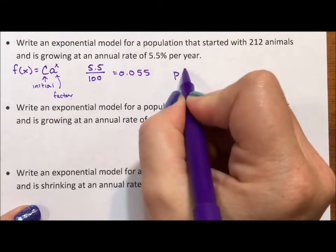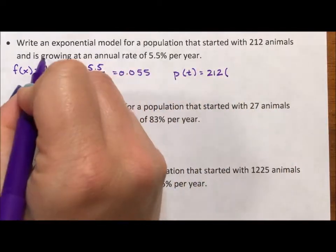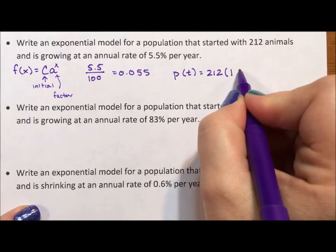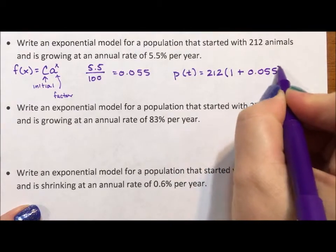So population over time, the initial is 212, and it's growing, which means we add 1 plus 0.055 to the t.